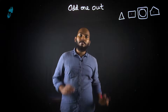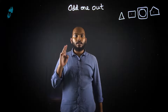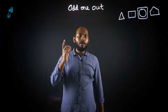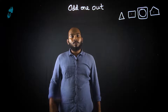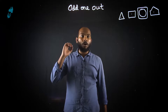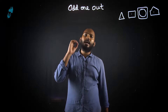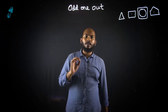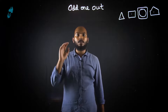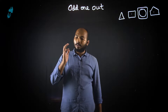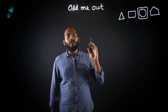Let's take another example. You have apple, banana, orange and carrot. All four of them are eatables. When you look at them as eatables they are all the same. But apple, banana and orange are fruits, while carrot is a vegetable. So carrot is an odd one out.